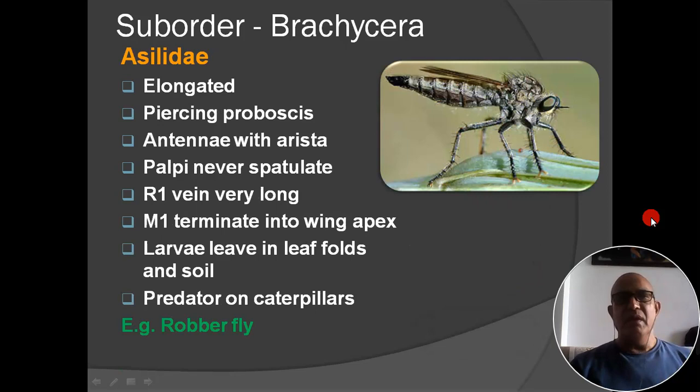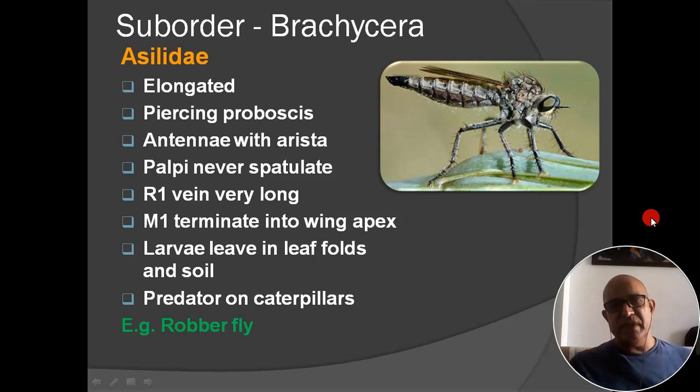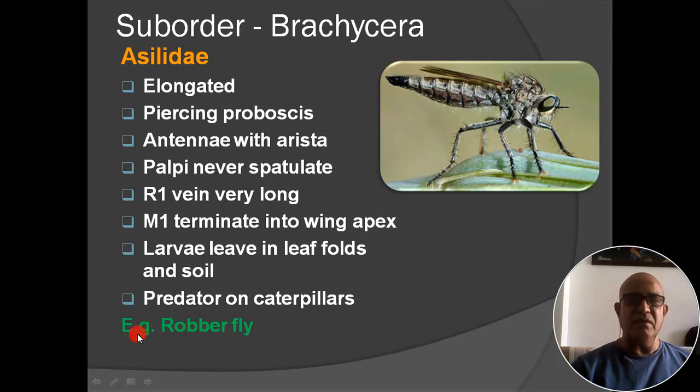Next family: Asilidae. Insects are elongated; proboscis piercing type; antenna with arista; palpi spiliform; R-vein long, terminating into wing apex; larvae live in leaf litter and soil; predatory on caterpillars. Example: robber fly — named because like a robber, this insect preys on caterpillars much larger than itself.